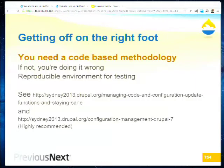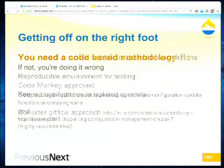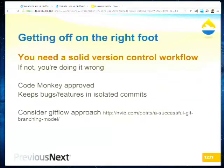Making sure everything goes through a code-based methodology is the first step to getting a reproducible test environment. You also need solid version control — something like Git Flow where you branch off, work on a feature or bug in isolation, and merge it back when it's ready. Tests should be a gate before a feature is considered ready to merge. If you're not using version control you really can't pinpoint when things went wrong.